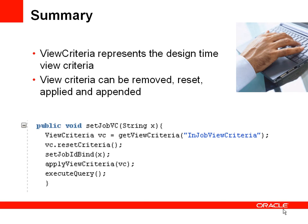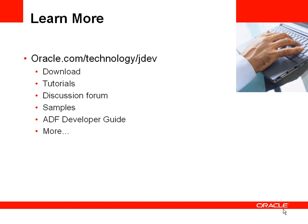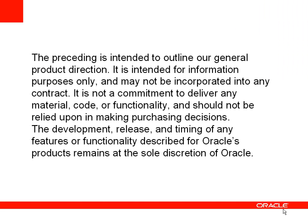To summarize: we have a ViewCriteria object representing the design-time view criteria. On this object we can remove it from the view object, reset it, apply view criteria bind variables, and append a view criteria on top of an existing one. For more information including downloads, tutorials, and discussions, you can go to the Oracle Technology Network. Thank you very much for listening.